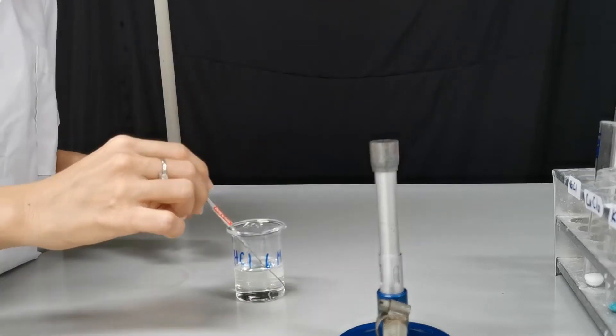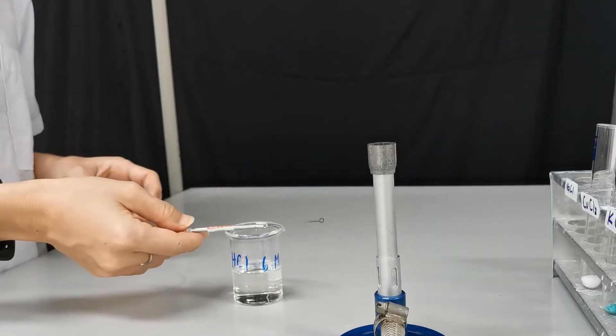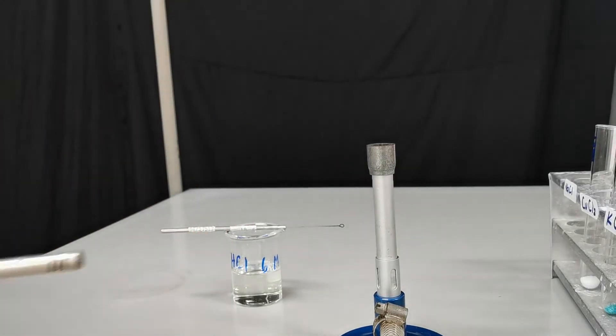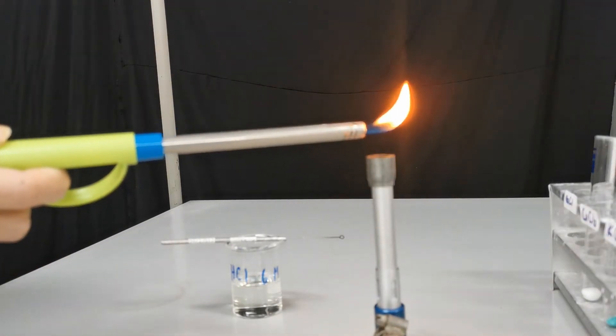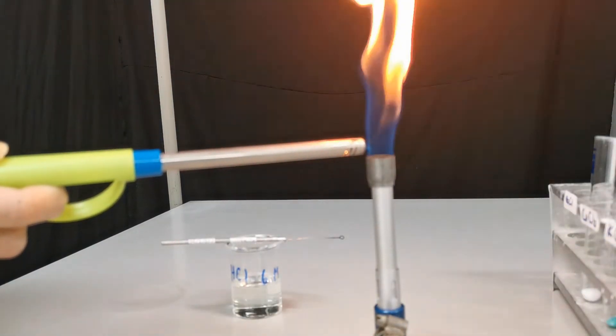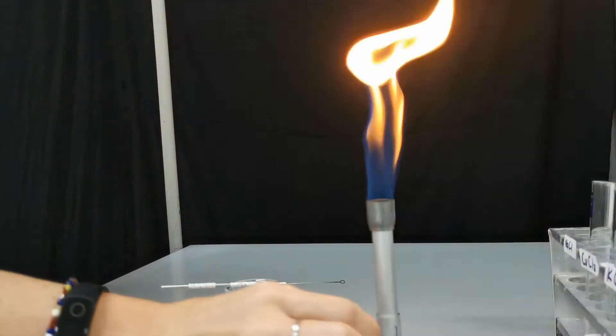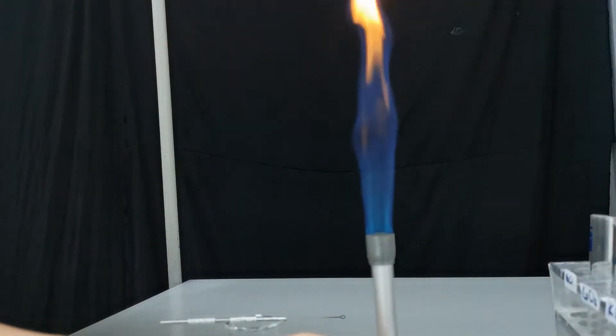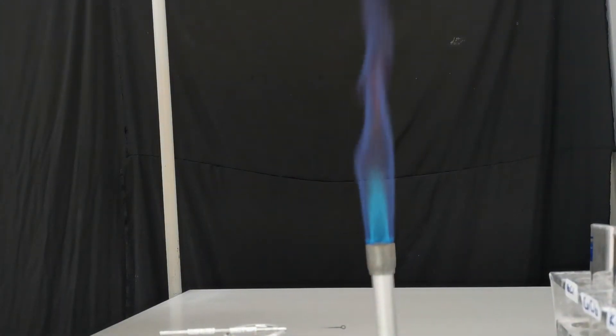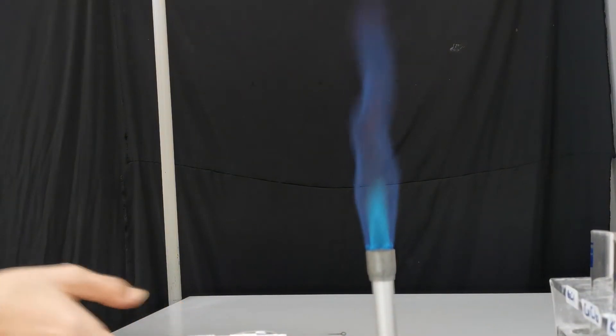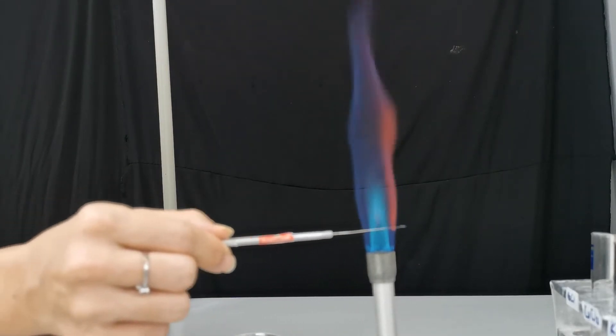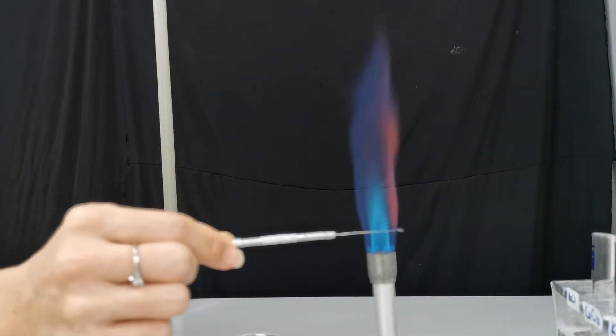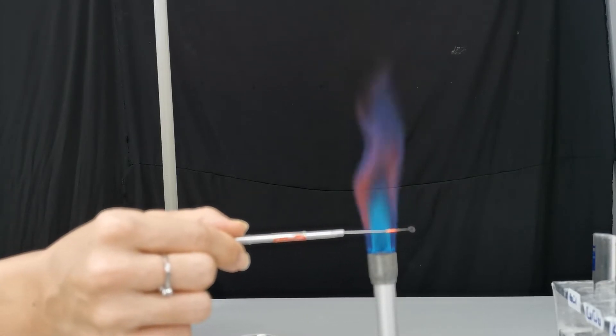After washing it with concentrated acid, then we can start the flame test. For flame tests we need a hot flame, so we need to maximize the oxygen flow in the Bunsen burner and get this blue flame. Before we start, we just burn the loop once again just to ensure that there is no impurities left over on the wire.